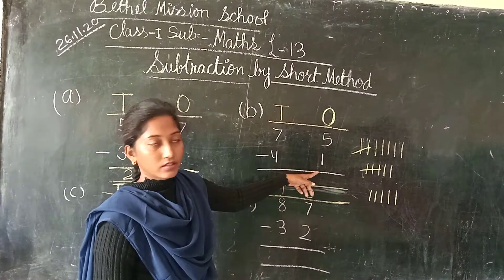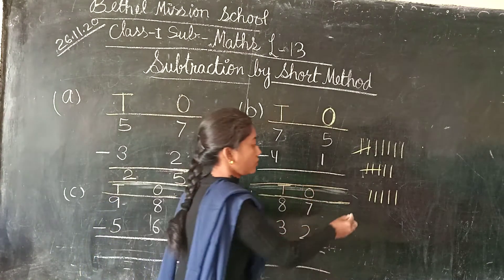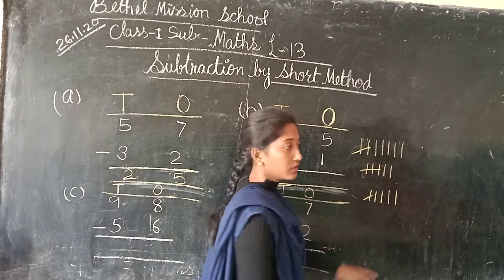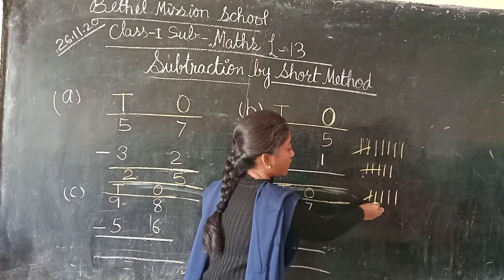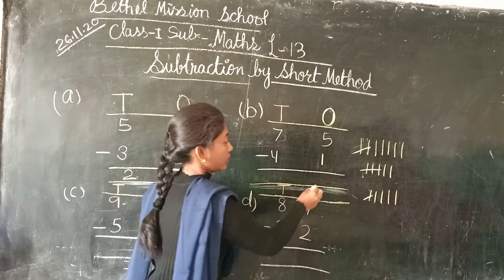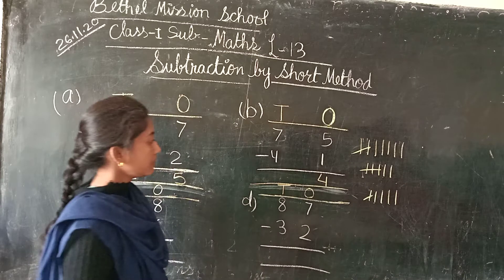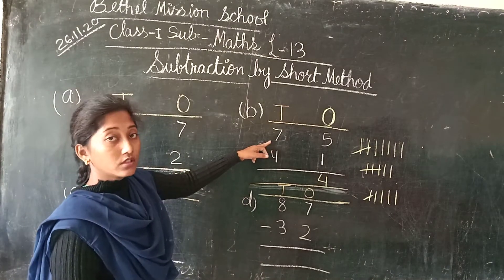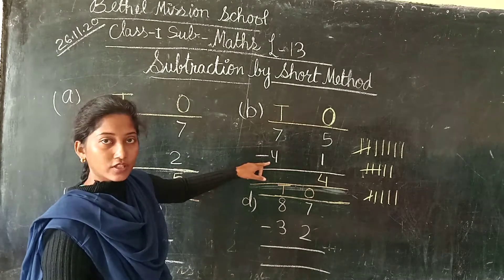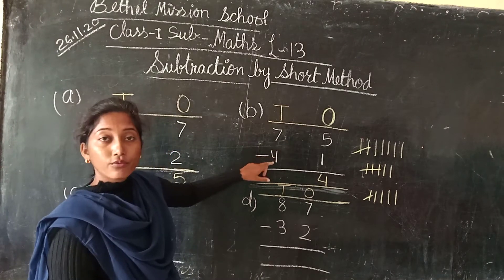5 minus 1, so we have to cut 1 line. How many are left? We have to count: 1, 2, 3, 4. How many are left? 4. So we will write here 4. Next we have to subtract tens from tens — 10 from tens.